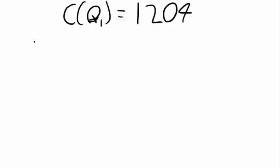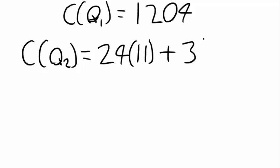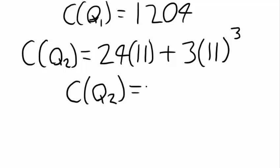Next, for the cost function for quantity 2, that equals 24 times q, which is 11, plus 3 times q cubed, where q is 11, so we have 11 cubed. That gives us a cost for quantity 2 equals 4,257.